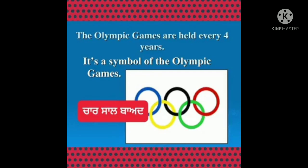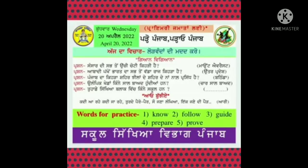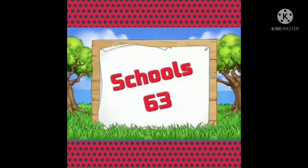Fourth question: After how many years are Olympic Games held? Olympic ਖੇਡਾਂ ਕਿੰਨੇ ਸਾਲ ਬਾਅਦ ਹੁੰਦੀਆਂ ਹਨ? ਓਲੰਪਿਕ ਖੇਡਾਂ ਚਾਰ ਸਾਲ ਬਾਅਦ ਹੁੰਦੀਆਂ ਹਨ - four years. Fifth question: How many schools are there in your education block? ਸਾਡਾ ਜ਼ਿਲ੍ਹਾ ਬਰਨਾਲਾ ਹੈ ਅਤੇ ਸਾਡੇ ਬਰਨਾਲਾ ਬਲਾਕ ਵਿੱਚ 38 ਸਕੂਲ ਹਨ। ਸਾਰੇ ਬੱਚਿਆਂ ਨੇ ਆਪਣੇ ਅਧਿਆਪਕ ਤੋਂ ਆਪਣੇ ਬਲਾਕ ਦੇ ਸਕੂਲਾਂ ਦੀ ਗਿਣਤੀ ਜਾਣ ਕੇ ਯਾਦ ਕਰਨੀ ਹੈ।